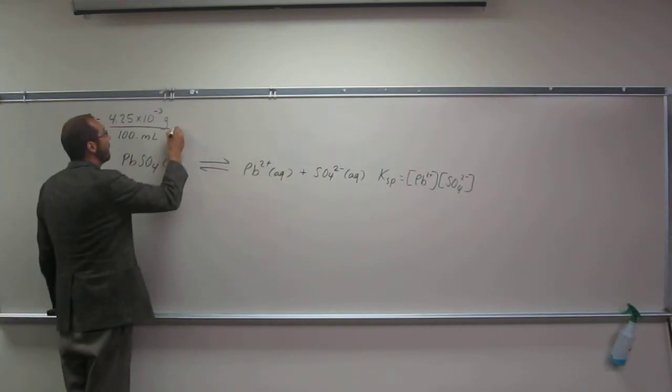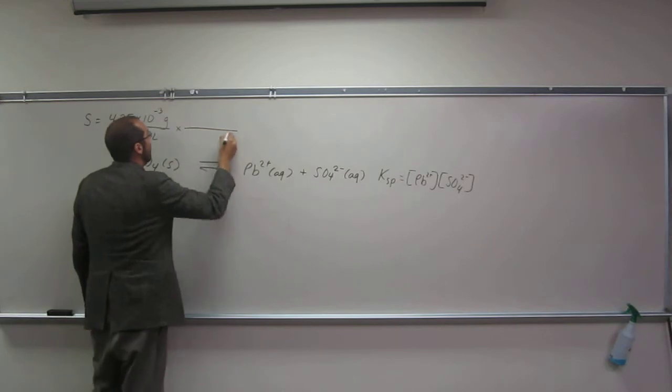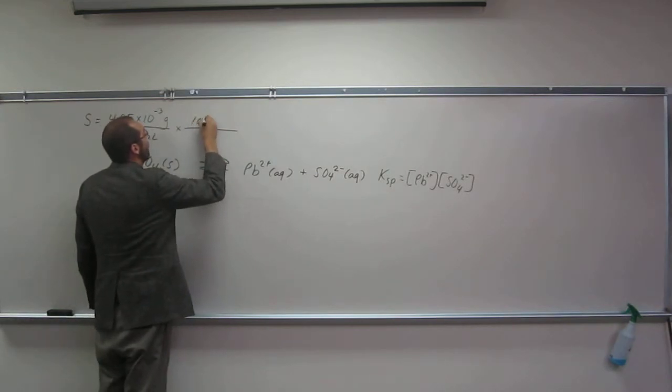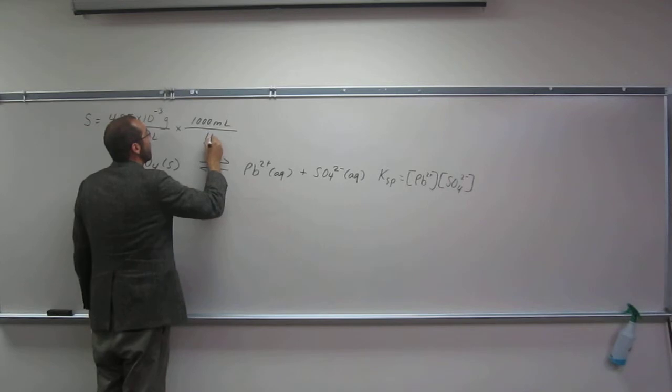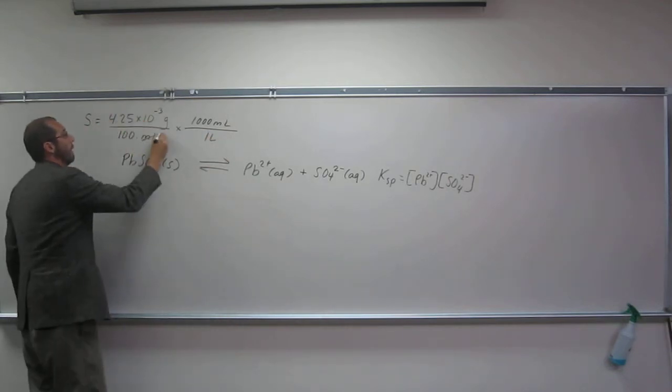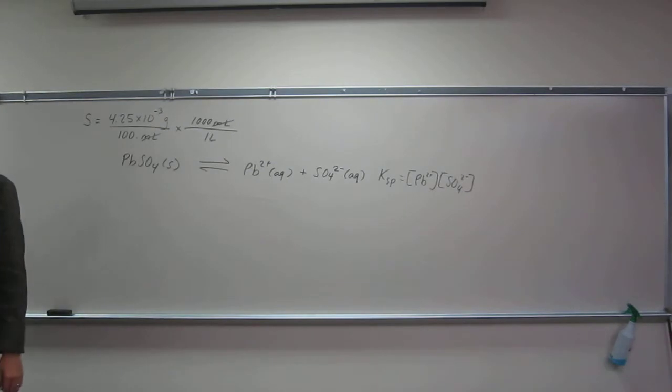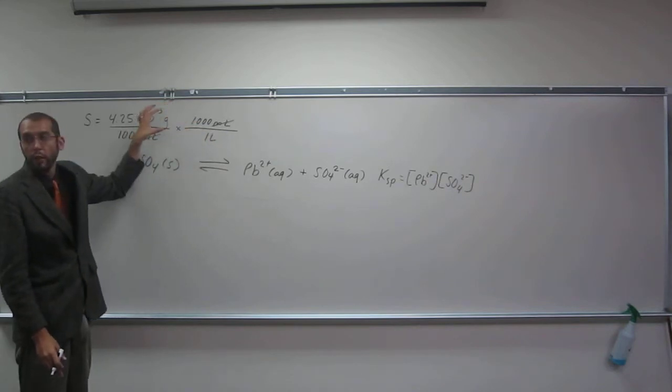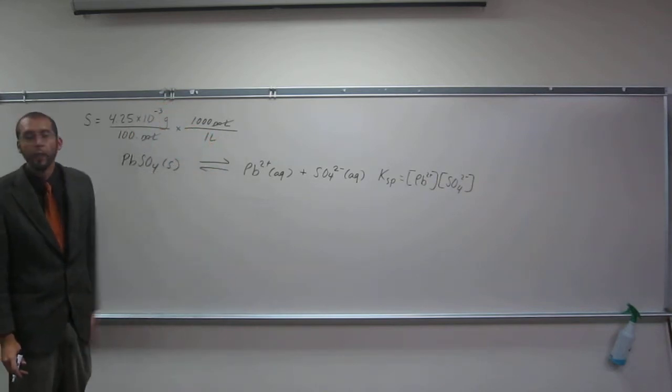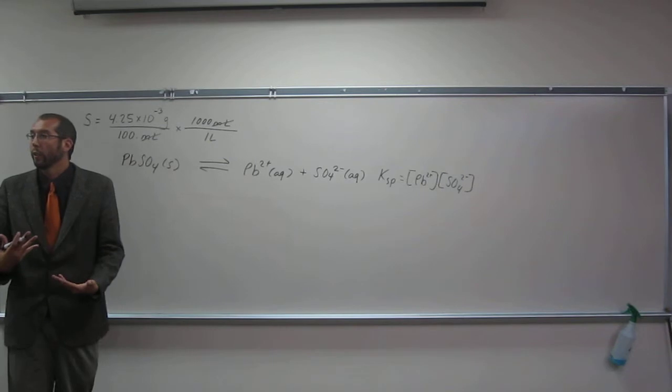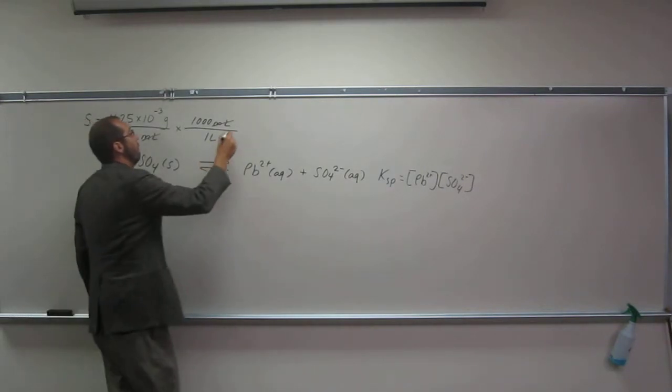How do we do that? Well, for every 1000 mL is one liter. The units of molarity are moles per liter. Do we have moles per liter here? No, we have grams per liter. So in order to get moles, we're going to have to use the molar mass.